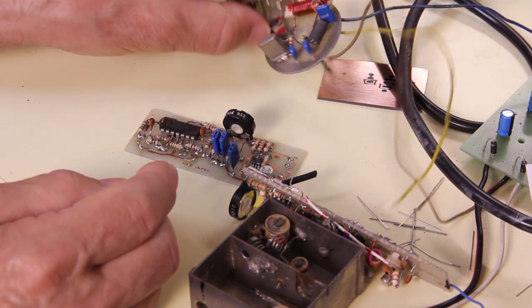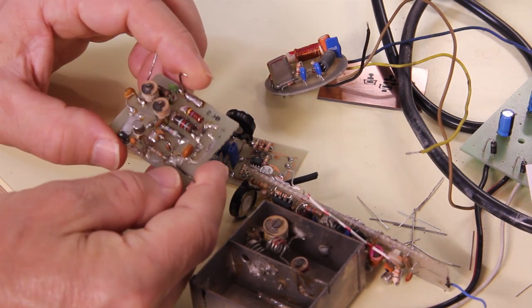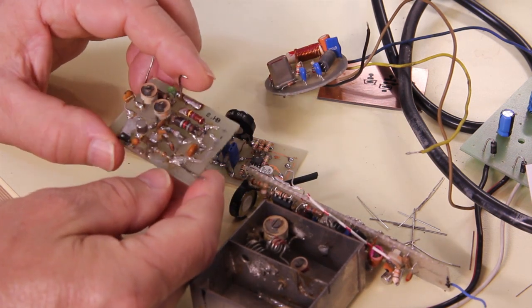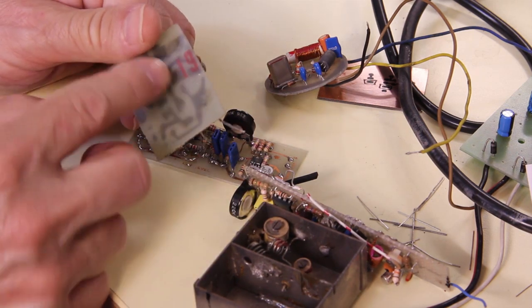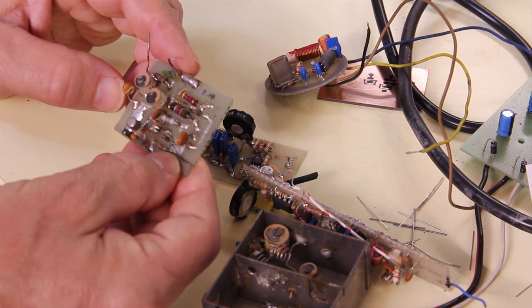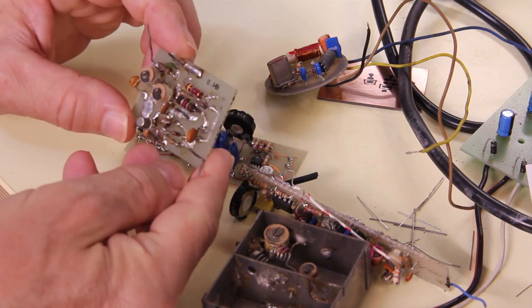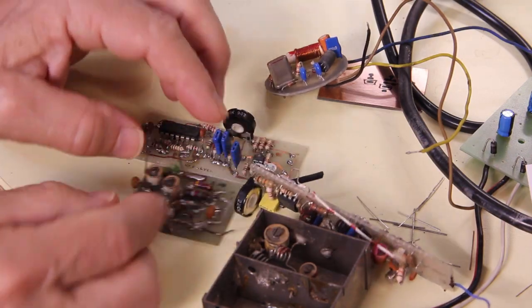But what I prefer most is this kind of circuit where the traces are etched on the board. As you can see, I don't drill any holes. The components are attached directly on the surface of the board like in this case.